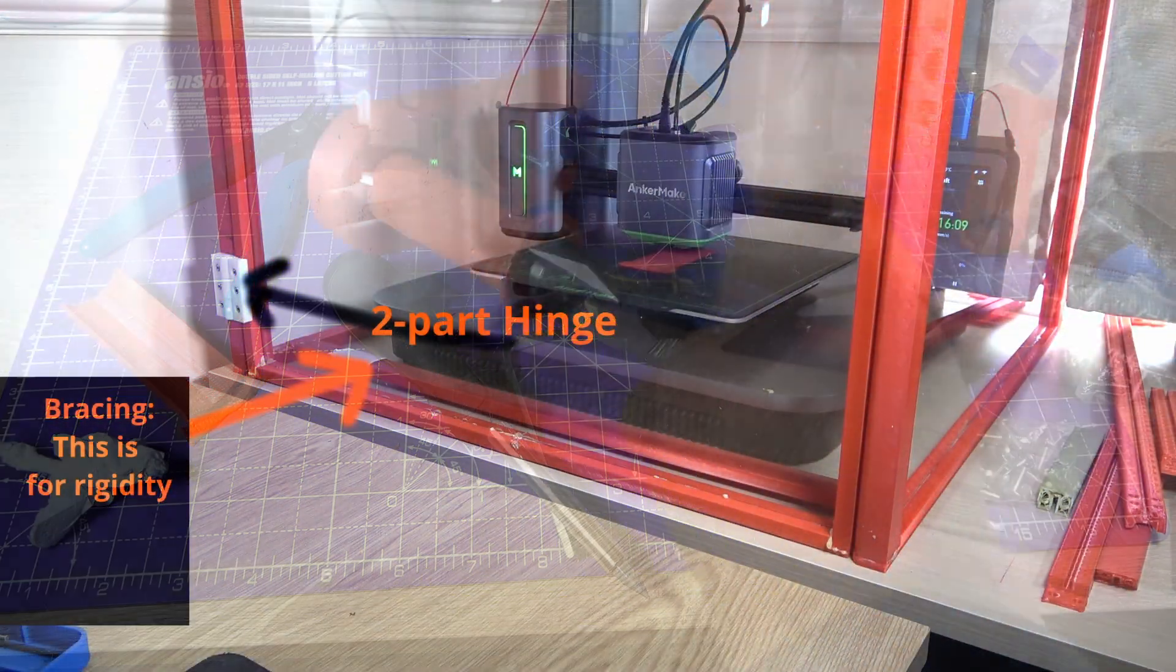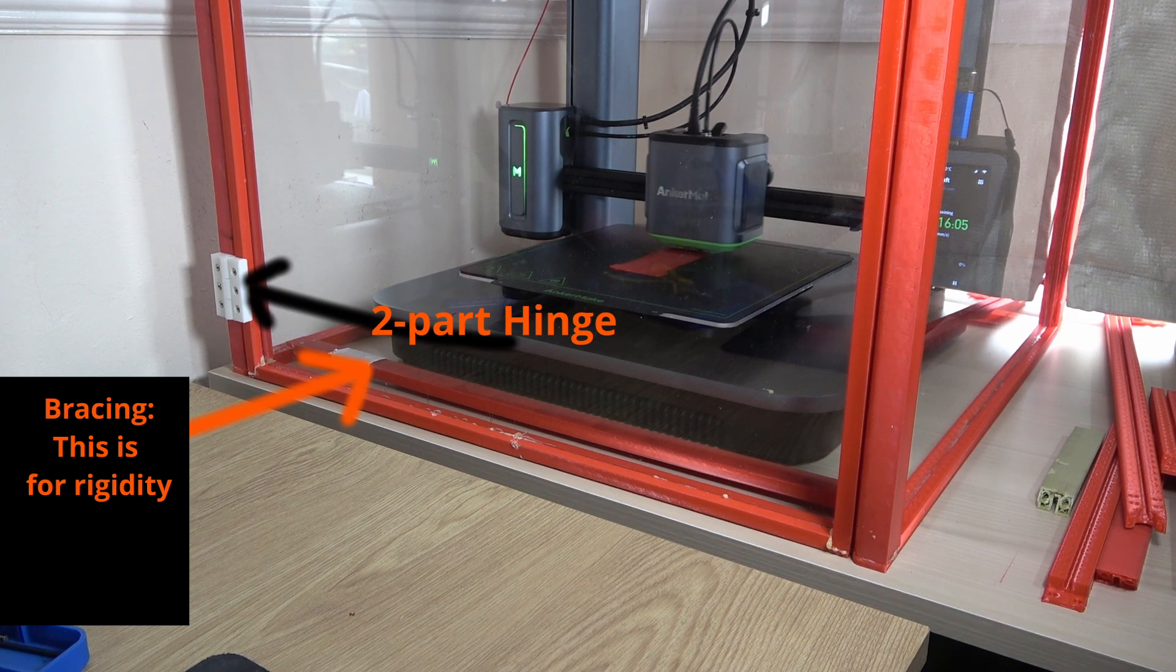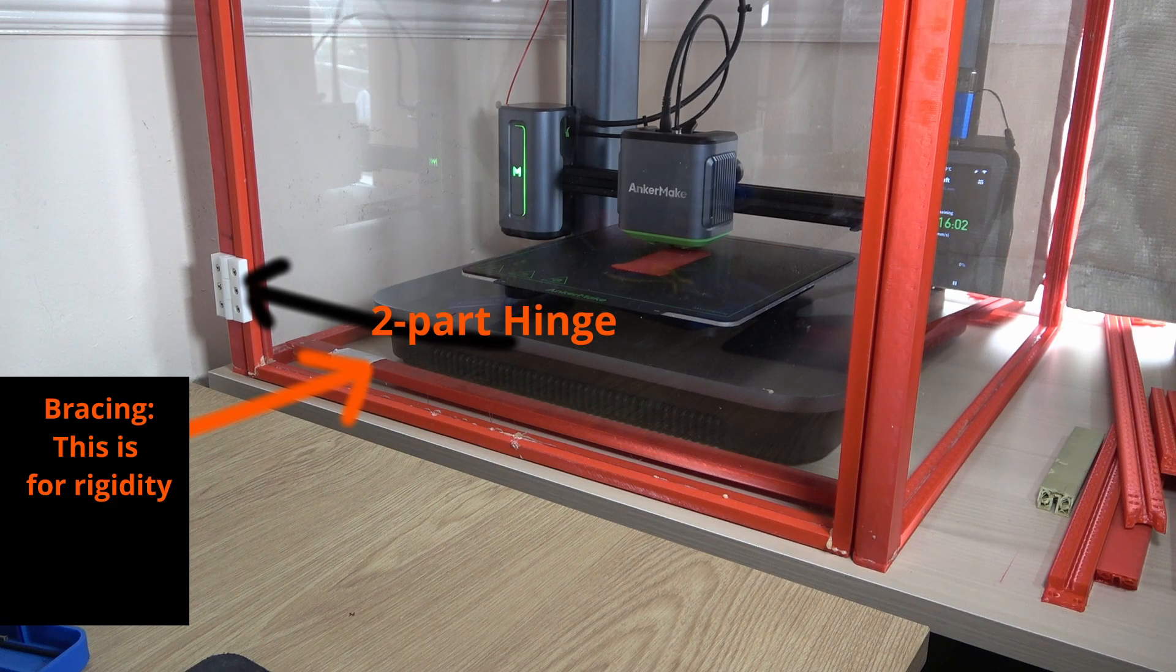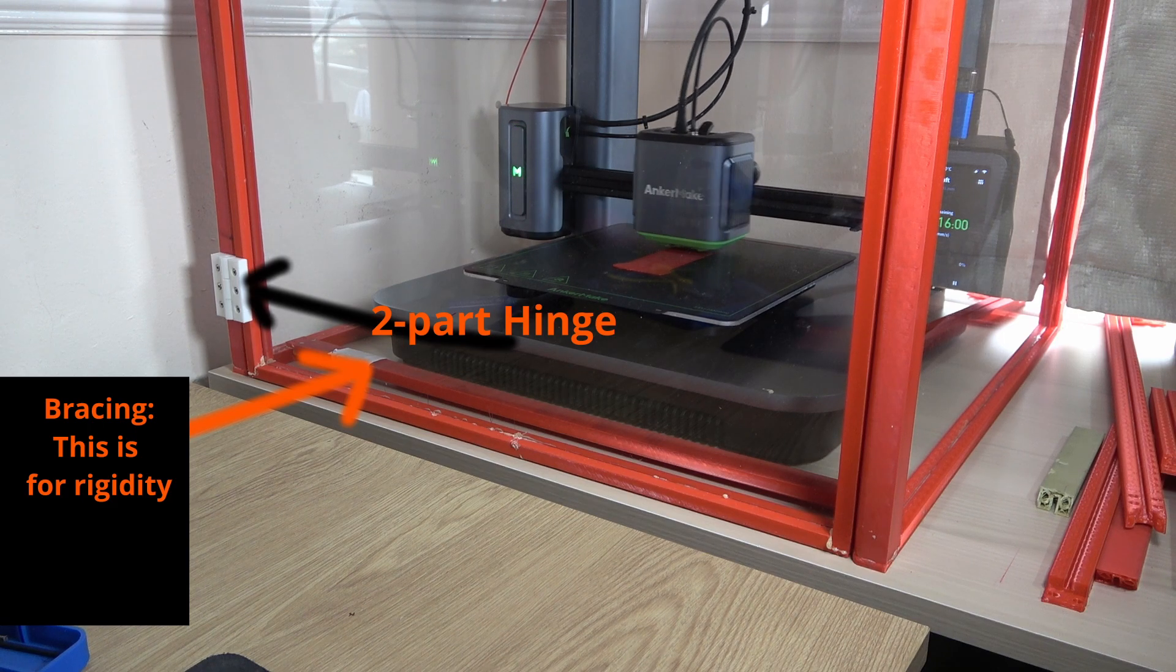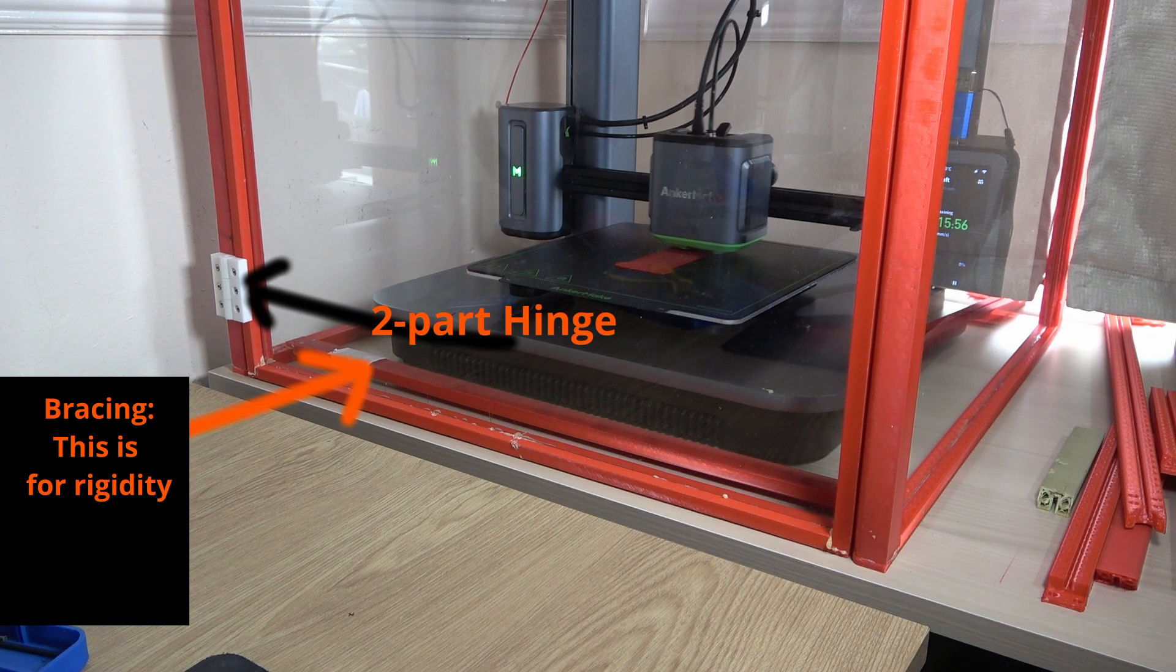There is also a bracing at the front of the enclosure. And finally, there are two hinges, one towards the top and the other towards the bottom of the door. They are fitted to the frame using M3 bolts of length 10 mm.